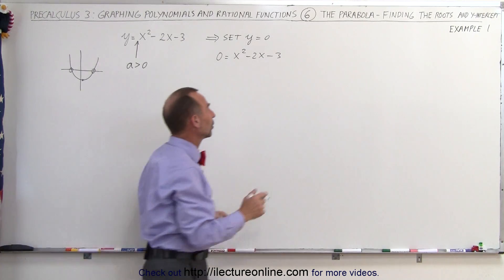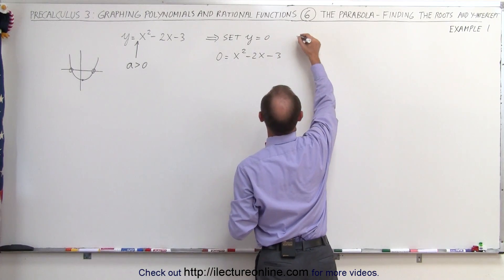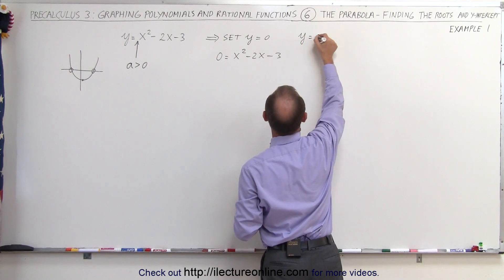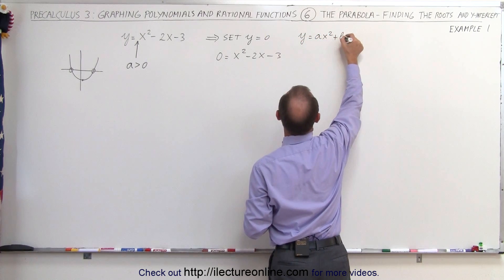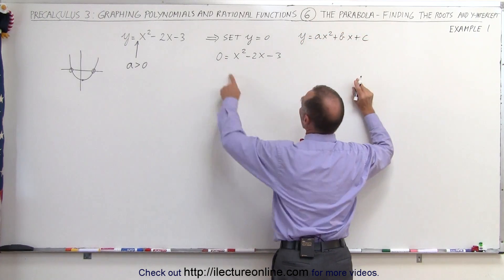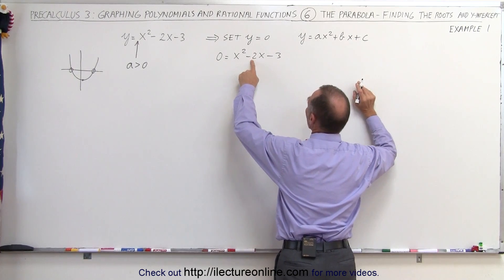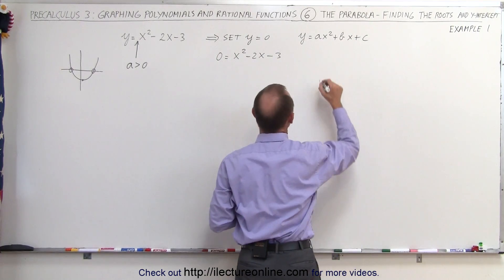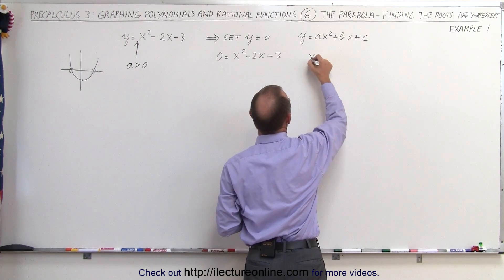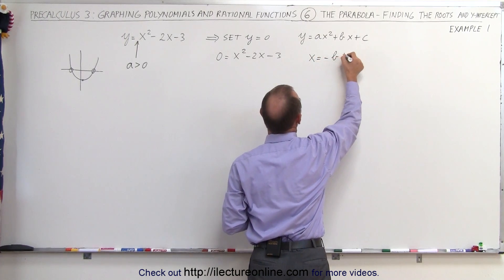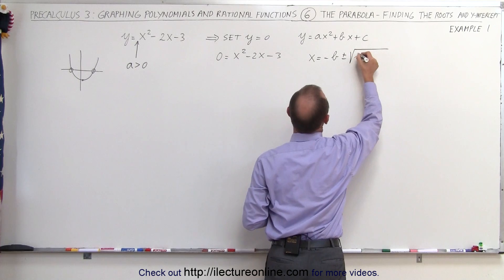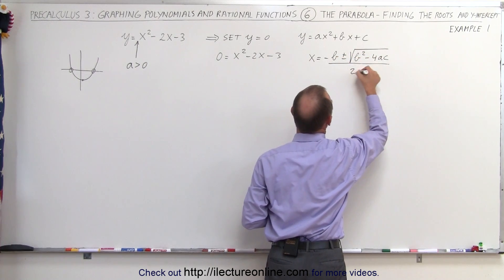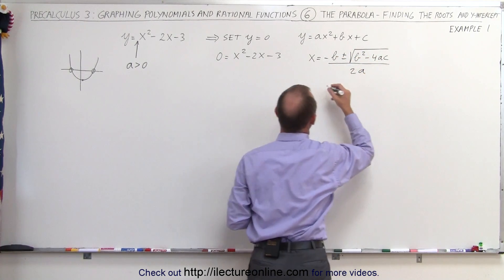We're going to use the quadratic formula. The general equation of a parabola is y equals ax squared plus bx plus c, where a is equal to 1, b is equal to negative 2, and c is equal to negative 3. So therefore, x is equal to minus b plus or minus the square root of b squared minus 4ac, all divided by 2a. We plug in the values.